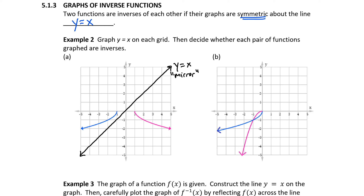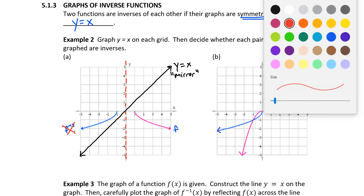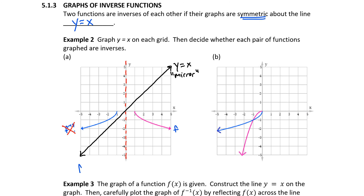At first glance, looking at the two functions given — let's call this one f and this one potentially f inverse — they do appear to be mirror images, but notice they are mirror images of each other across the y-axis. The one on the left is reflected across the y-axis to match the one on the right. So we cannot say they are inverse functions. These are not inverses.